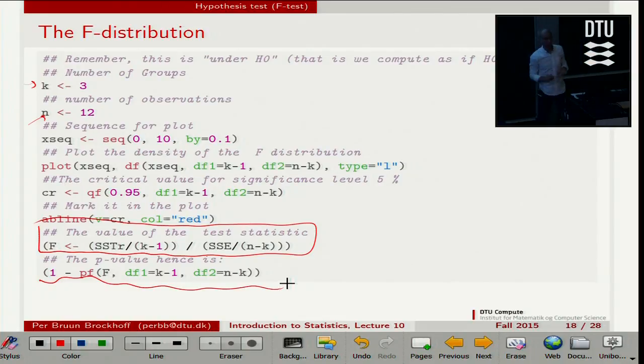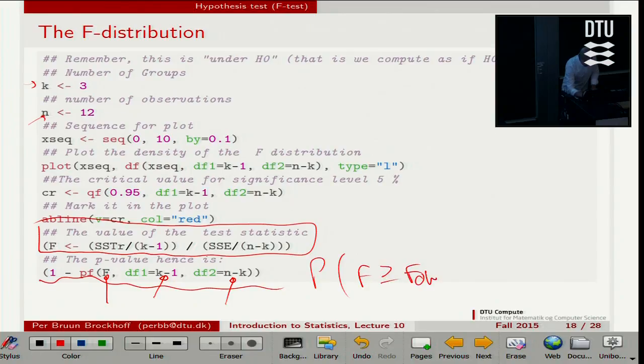Because there is a pf function for probability of the f-distribution, used with numerator degrees of freedom, denominator degrees of freedom. You don't have to write df1 and df2. It comes in that order, so you can just write k minus 1 and n minus k. Plugging in the f that I just computed. It's a number now.